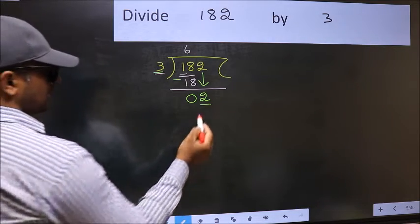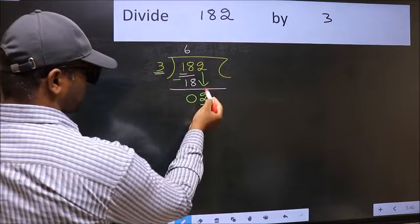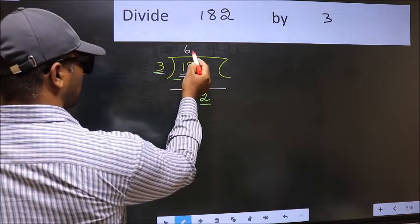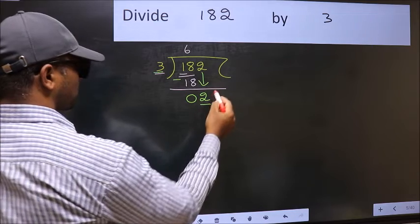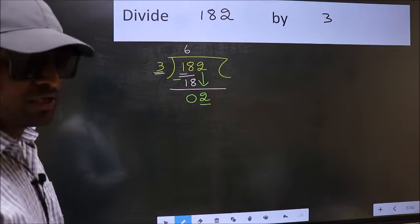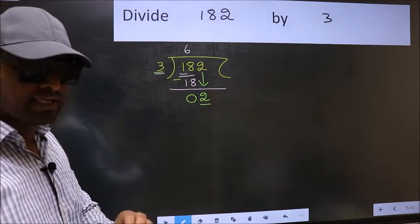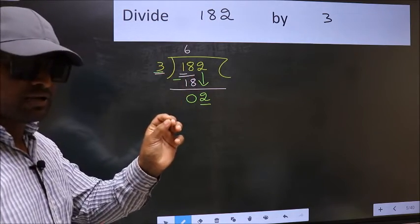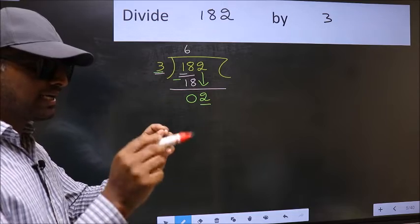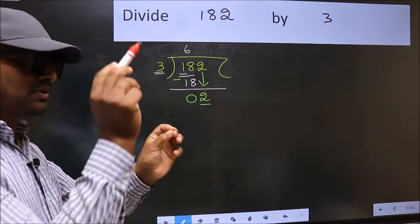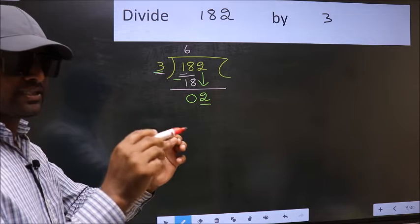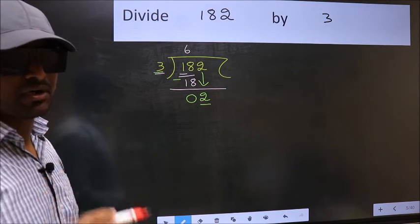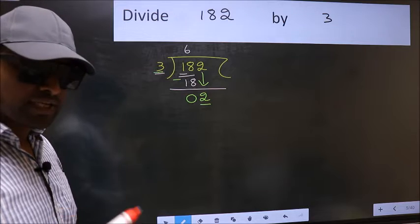And in the same step, you want to put a dot and take 0, which is wrong. I repeat: bringing the number down and putting a dot and taking 0 both at the same step, you are not supposed to do.